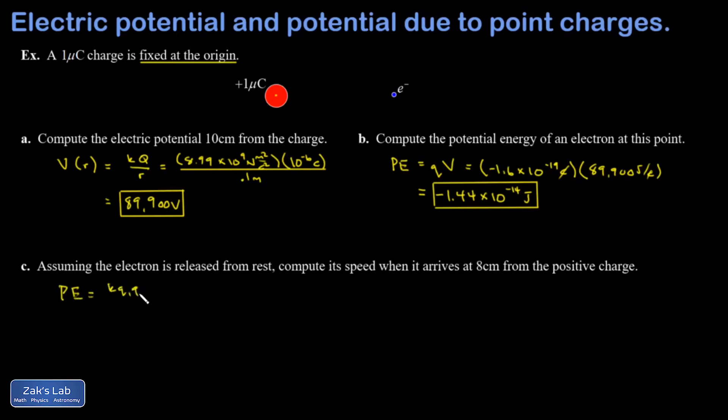I have a couple options here. I could compute the potential energy directly using the formula potential energy is k, q1, q2, over r. Or I could compute the potential at this location and then multiply it by the size of the charge for the electron. Since we've already done enough problems this way, and this video is about potential, why don't we do it the potential way?